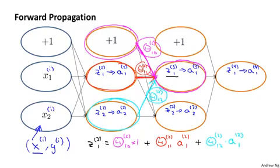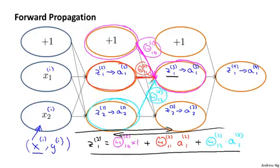And so that's forward propagation. And it turns out that, as we'll see later in this video, what backpropagation is doing is a process very similar to this, except that instead of the computations flowing from the left to the right of this network, the computations instead flow from the right to the left of the network, and using a very similar computation as this.